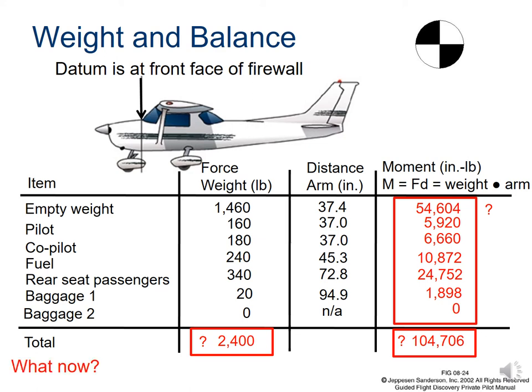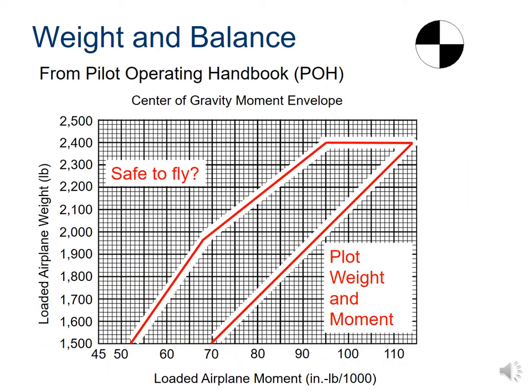Now we need to determine if the plane is safe to fly. We will use the center of gravity moment envelope, which is specific to each aircraft. This is a weight and balance chart from the manufacturer, often found in a pilot operating handbook. The weight and moment must fall within these boundaries for the airplane to be controllable. If the center of gravity lies too far back, the aircraft is inclined to pitch up, potentially entering a stall condition. If the center of gravity is too far forward, the aircraft is inclined to pitch down. A pilot and supporting ground crew, if applicable, need to perform several important tasks prior to flight.